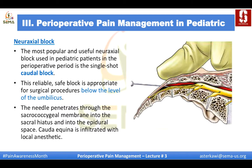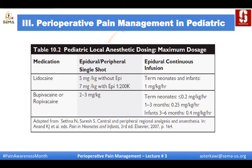Regarding neuroaxial block in pediatrics, the caudal block is the most popular and useful neuroaxial block in children. This reliable, safe block is appropriate for surgeries below the level of the umbilicus. The needle penetrates through the sacrococcygeal membrane into the sacral hiatus and into the epidural space, where the cauda equina is infiltrated with local anesthetic. A table shows local anesthetic dosing and maximum doses for caudal, peripheral, and epidural use in children.